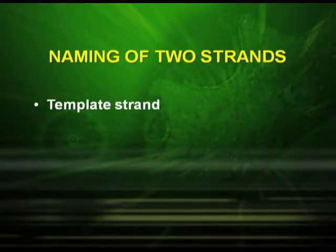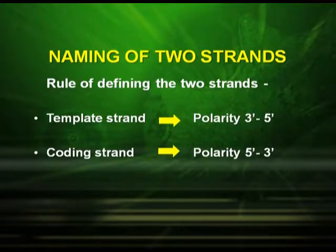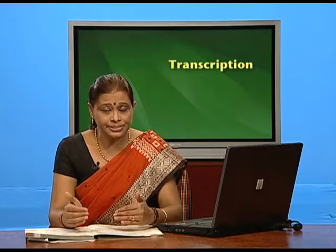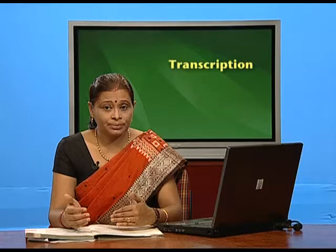Since DNA has two strands, how do we name them? The two strands are named the template strand and the coding strand. DNA has anti-parallel polarity — 5 prime to 3 prime and 3 prime to 5 prime. RNA polymerase transcribes in the direction 5 prime to 3 prime. Therefore, the template strand has polarity from 3 prime to 5 prime, and the coding strand has polarity from 5 prime to 3 prime. Surprisingly, the strand called the coding strand is the one that is not transcribed, while the one that is transcribed is called the template strand.